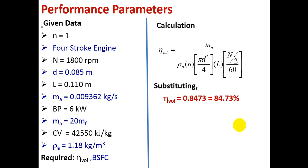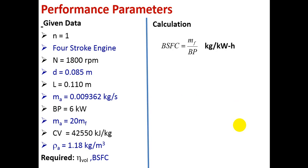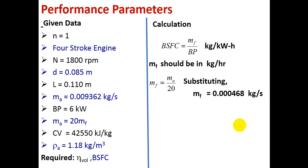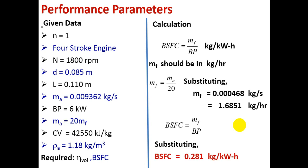Next, find brake specific fuel consumption (BSFC) = mass of fuel / brake power. The mass of fuel must be in kg/hr. From the air-fuel ratio: mF = mA / 20. Substituting, mF = 0.000468 kg/s. Converting to kg/hr by multiplying by 3600: mF = 1.6851 kg/hr. Substituting into the BSFC formula gives BSFC = 0.281 kg/kWh.